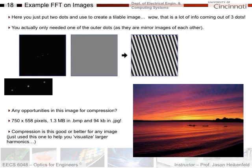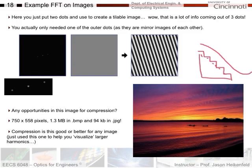Why store every bit when you can recognize that there are spatial frequencies and gradual transitions you could represent as a sine wave? You could represent a decrease in intensity as a bunch of bits, paying the price for every bit level, or you could say it looks like part of a sine wave — a gradual transition — and decrease the data storage needed. For example: a 750 by 558 pixel image in bitmap format is 1.3 megabytes; in JPEG format, which is Fourier-transform-compressed, it's less than 100 kilobytes. This compression is this good or better for any image.